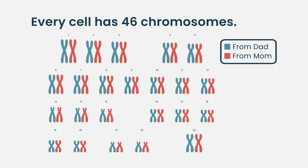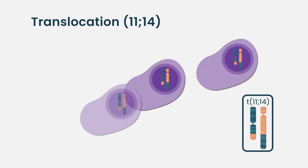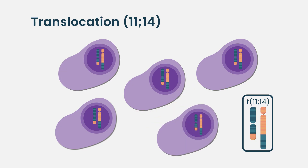Translocation 11;14 basically means that in your genes — every cell has 46 chromosomes, 23 from mom and 23 from dad — this does not mean you were born with a problem in the genes. But once someone gets myeloma, in that myeloma cell, a part of chromosome 11 and a part of chromosome 14 attached to each other when the cell was dividing, and then it replicated.